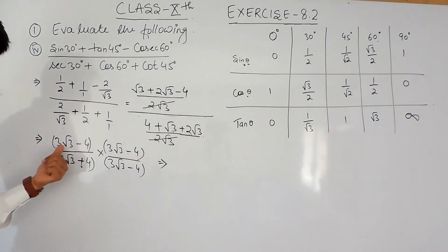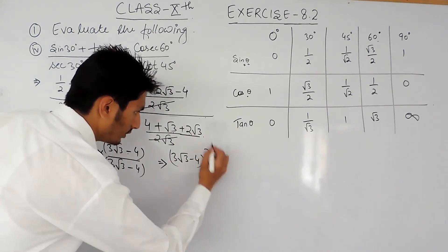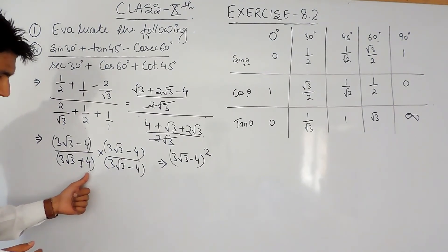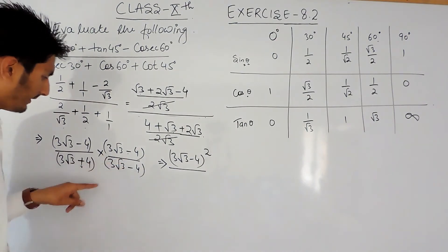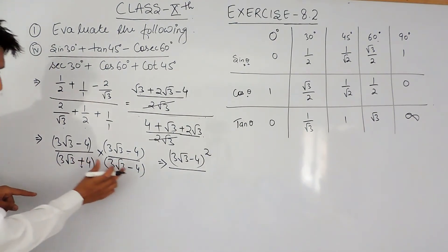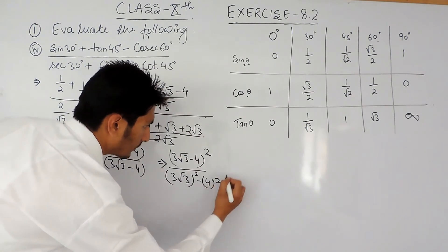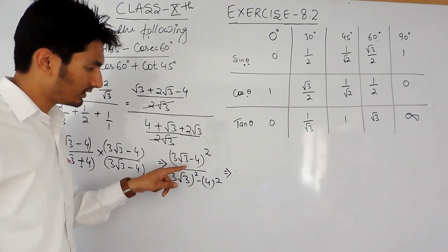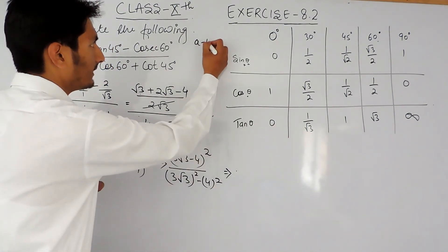Now if I consider the numerator term as 'a' and 4 as 'b', then a minus b multiplied by a minus b can be written as (a minus b) whole squared. In the denominator it is (a plus b) into (a minus b), and we know that (a plus b)(a minus b) equals a squared minus b squared.